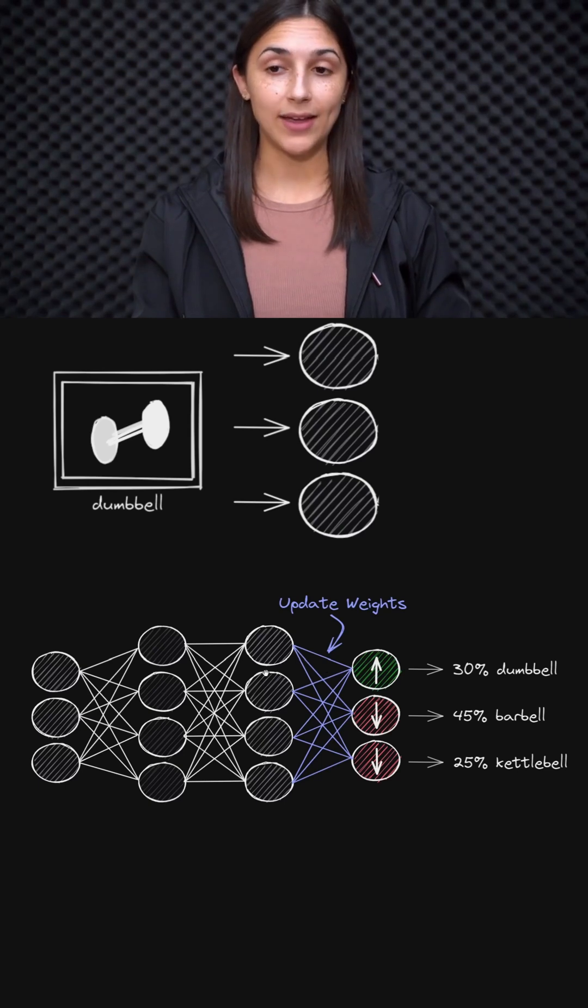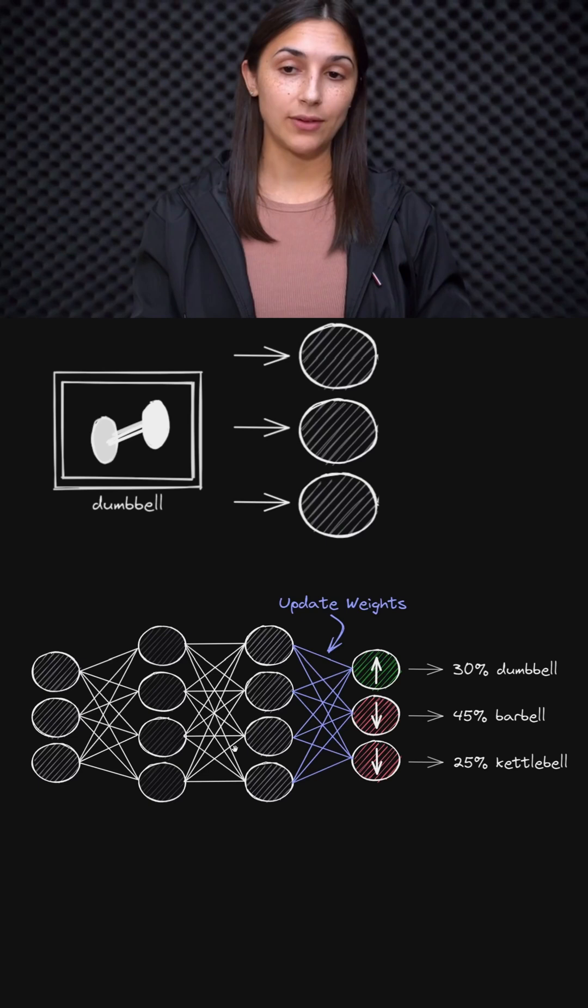The optimizer could update the activation output from this layer, right? Well, actually not directly, because the activation output from this layer is a direct function of these weights to the left of it.